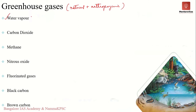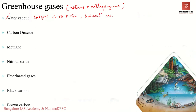Water vapor is the largest overall contributor to the greenhouse effect. Humans are not directly responsible for emitting water vapor in quantities sufficient to change its atmospheric concentration. However, carbon dioxide and other greenhouse gases are increasing the amount of water vapor in the air by boosting the rate of evaporation. So while water vapor is one of the largest contributors to the greenhouse effect, its concentration is not directly increased by human activities — but indirectly, because global warming increases the rate of evaporation, putting more water vapor into the atmosphere and causing even more warming.